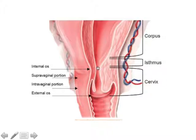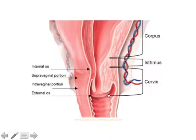Just a little bit higher, this is called the isthmus — this is the lowest part of the uterus, important as we will find out a little bit later. Higher up, we have the corpus with the myometrium, and this represents the cervix. This is the external os, which is visible when we do a speculum examination.